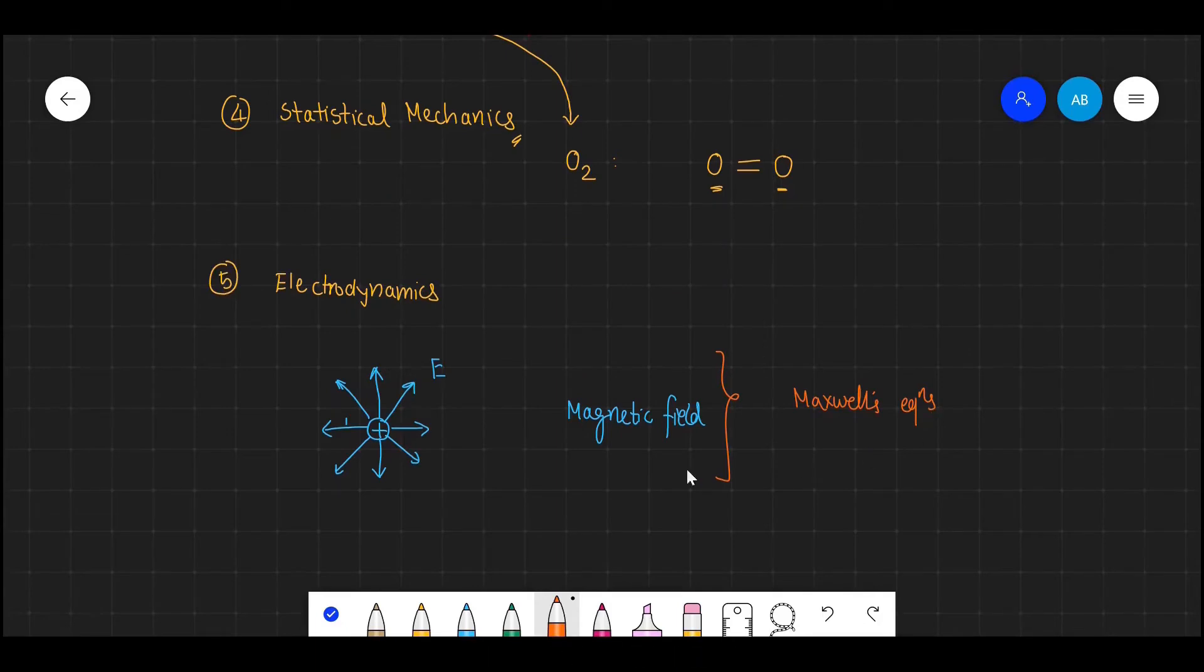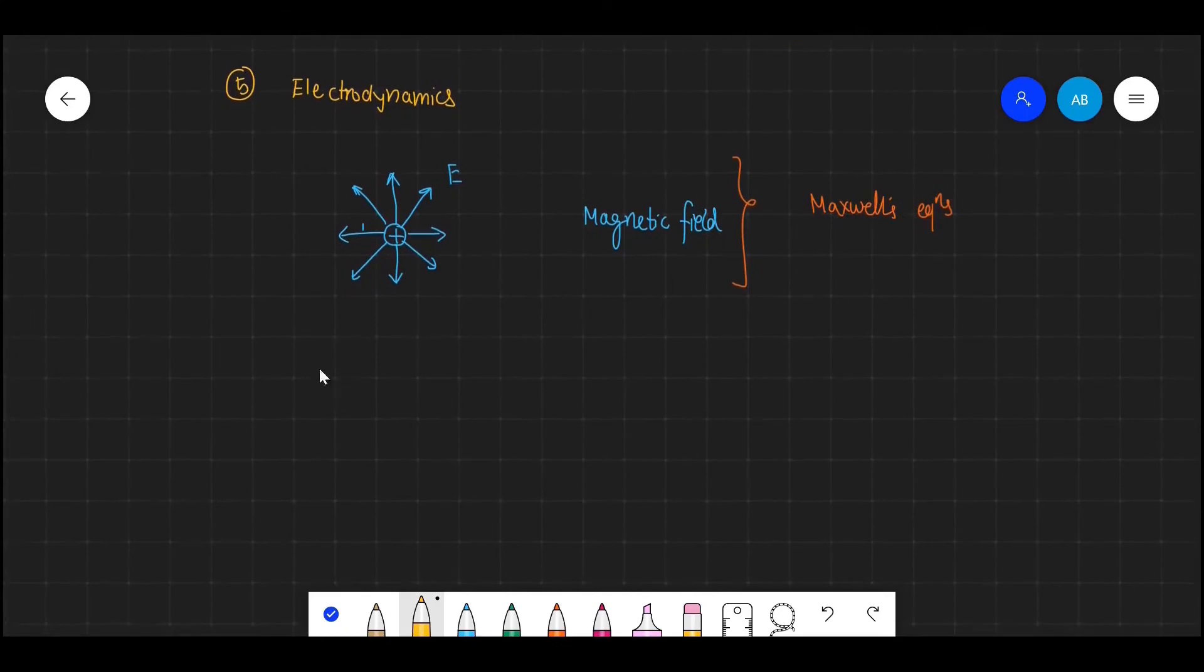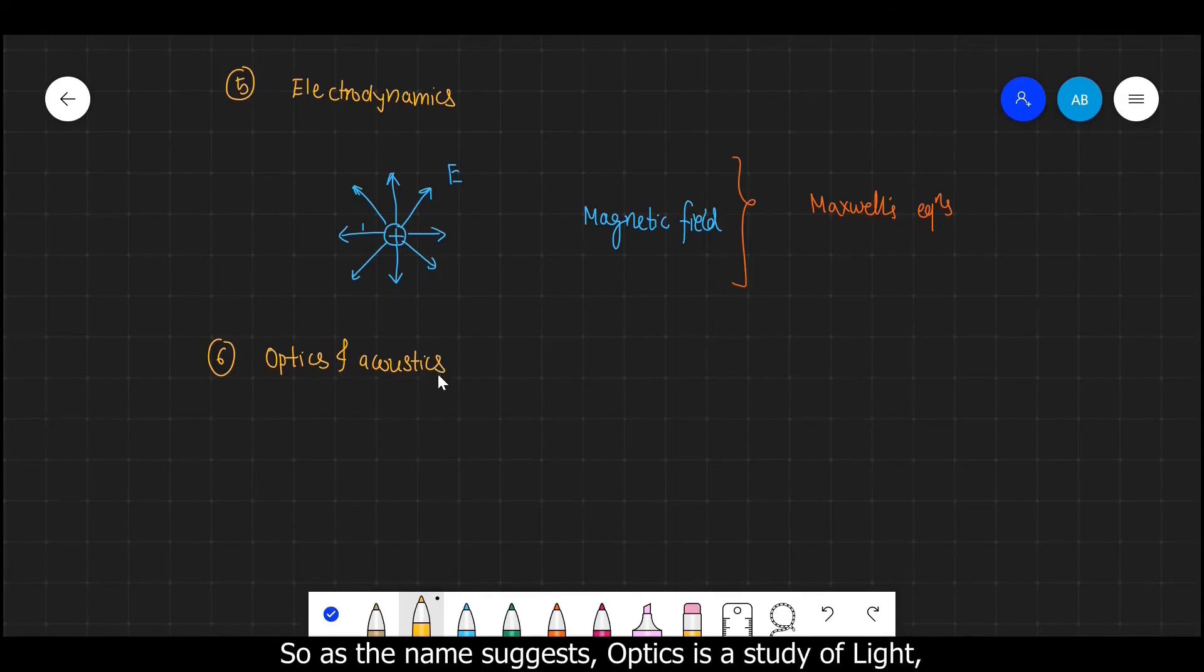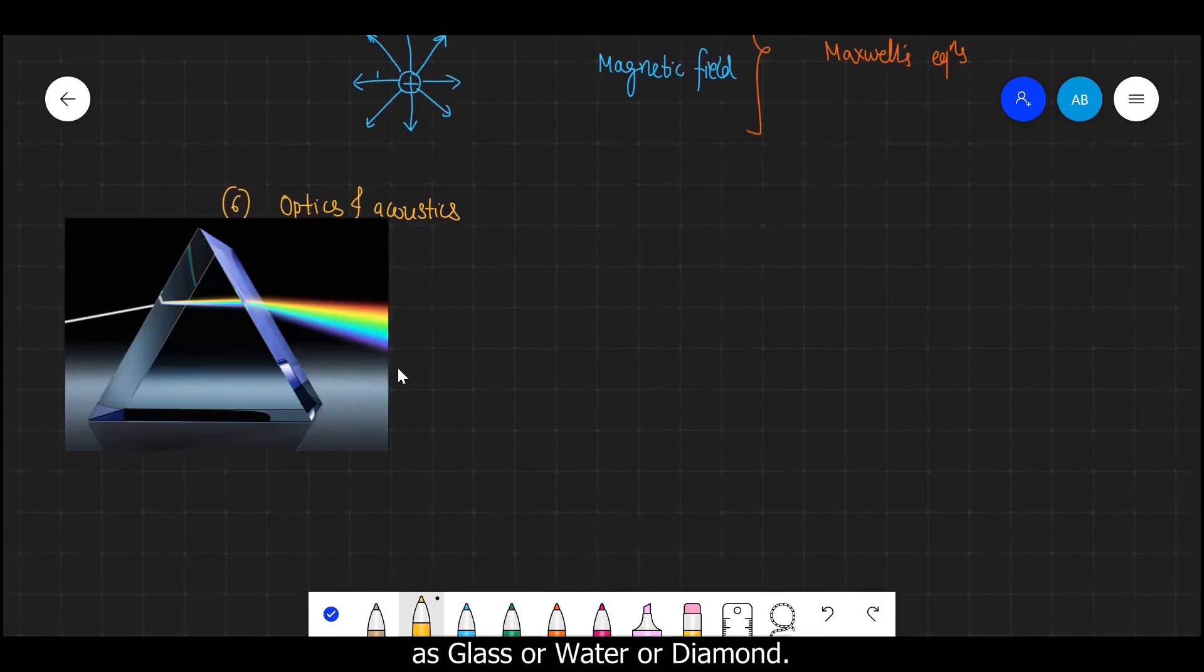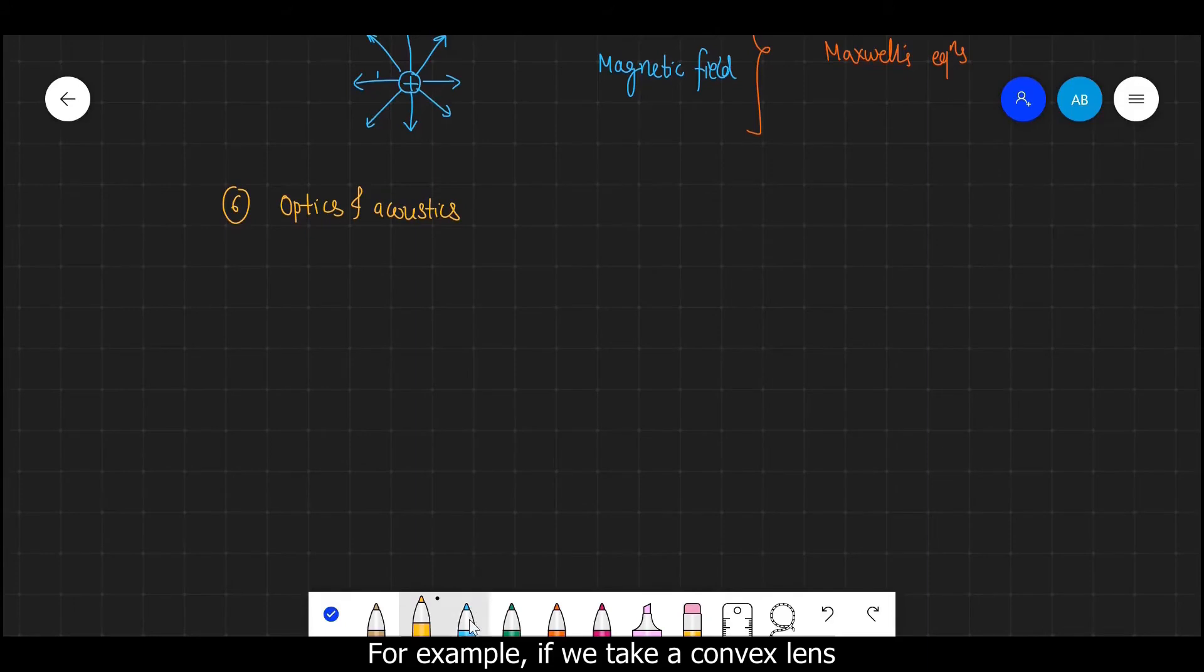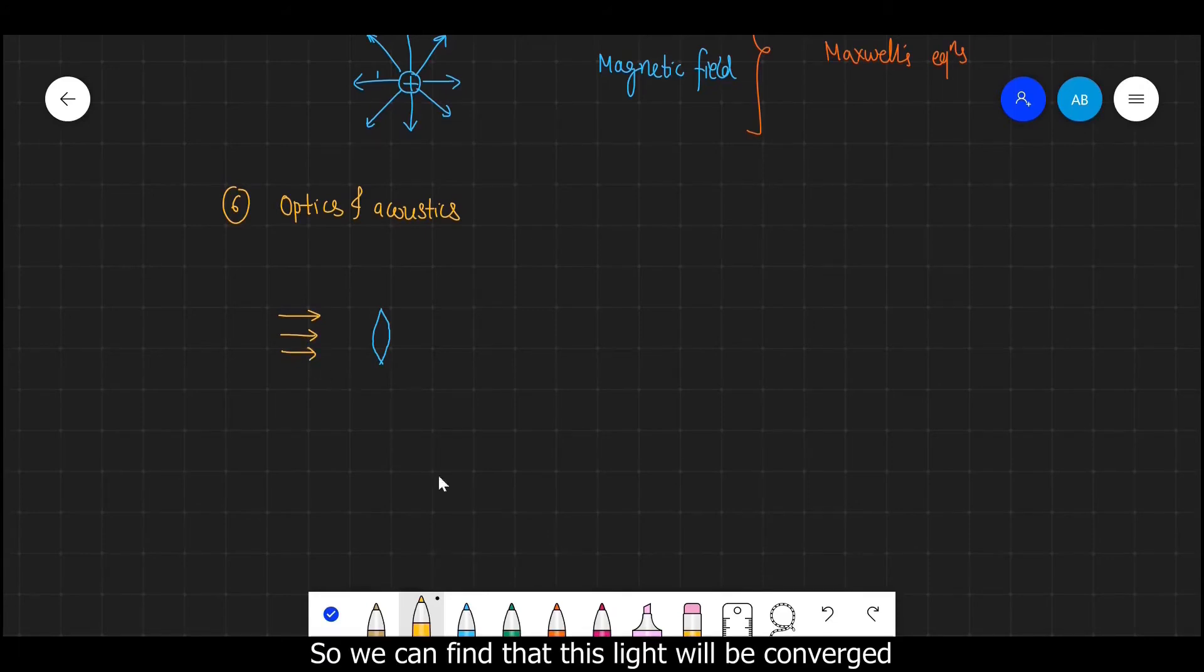Now the next branch is Optics and acoustics. So as the name suggests, Optics is the study of light while acoustics is the study of sound. In Optics we can study how light will behave when it passes through some medium such as glass or water or diamond. For example, if we take a convex lens which looks like this and we allow some light to pass through it. So we can find that this light will be converged or focused to a single point like this. This point is known as focal point.